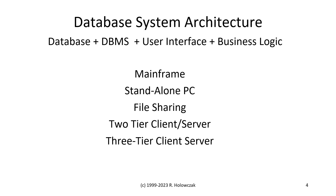Those five architectures are: the mainframe architecture, standalone PC, file sharing, two-tier client server, and three-tier client server architecture. Over the next few slides, we'll introduce each of these architectures and talk about their features, their pros, and their cons.